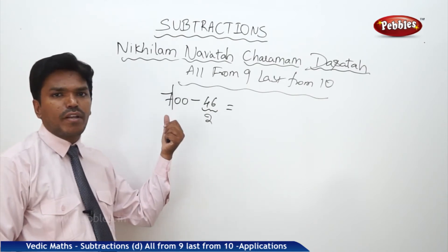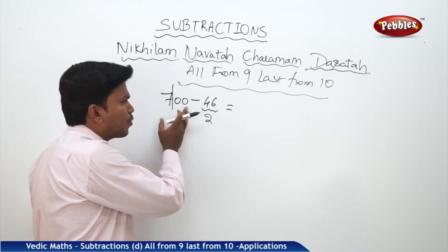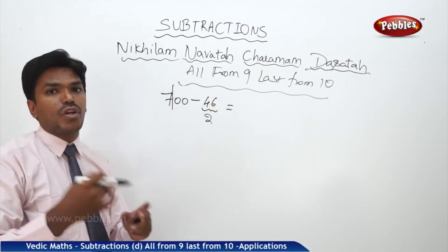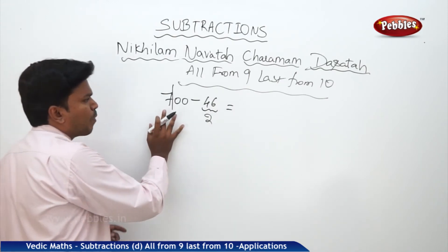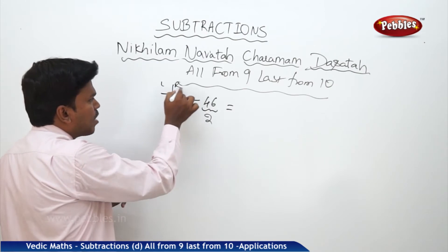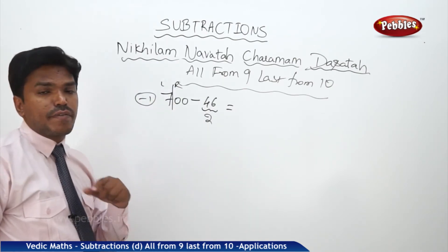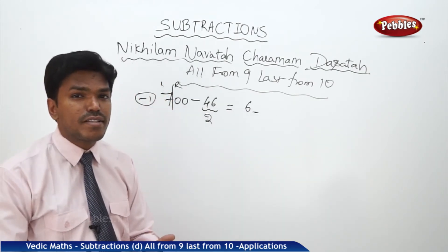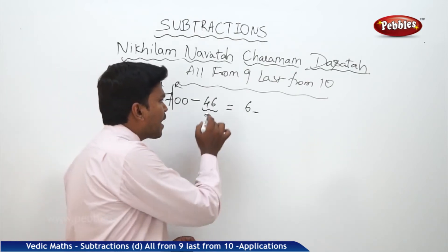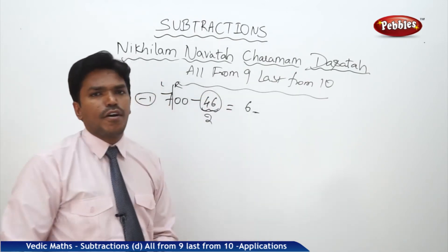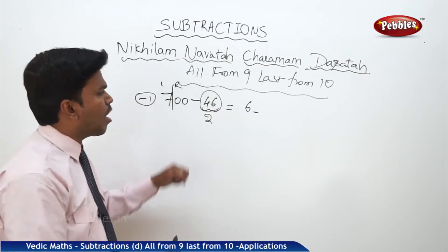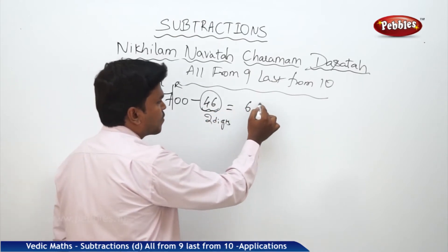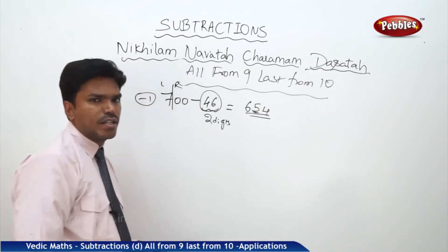If it is 2 digits, partition 2 digits from the right. If it is 3 digits, 3 digits from the right. If it is 4 digits, 4 digits from the right — like that you have to make a partition. Now the number is divided into two parts: left side and right side. To the left side part, subtract 1 — so 7 becomes 6. To get the remaining answer, apply 'all from 9, last from 10' to the subtrahend 46, which gives 54. So the answer is 654.